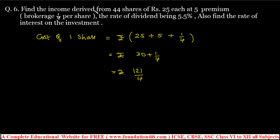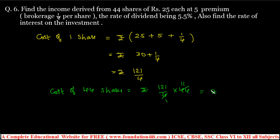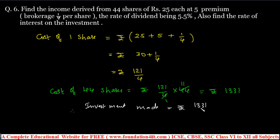Cost of 44 shares = 121/4 × 44 = 121 × 11 = rupees 1331. So the investment made is rupees 1331. Here, 25 is the face value of each share. 30 is the market value. Based on the face value, premium and discount are applied. Face value of 1 share is rupees 25.